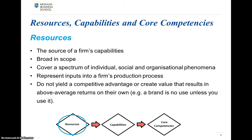When we discuss what resources a firm has at its disposal, they do tend to be quite broad, covering a spectrum of individual, social and organisational phenomena. They represent inputs into a firm's production process, so it's most easy to think about what things a firm actually puts into their production process — what contributes to them being able to make or deliver whatever it is they make or provide. Resources do not yield a competitive advantage or create value that results in above-average returns on their own. For example, a brand is not going to be of any use long-term to an organisation unless you're able to use it, and that's what capabilities are about — capabilities tend to involve the use and combination of at least a couple of different resources.